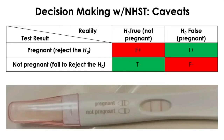It is claimed that the sensitivity of the test is 95%, where sensitivity is defined as the performance of a test to correctly identify a condition when the person is in fact pregnant — that is the true positive. However, sensitivity is only one of the components used to characterize the accuracy of a test.